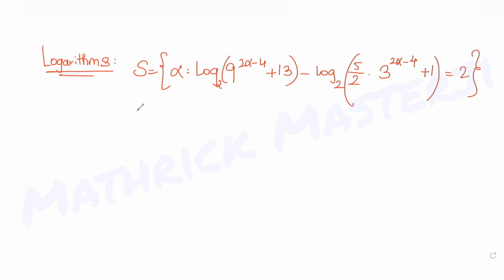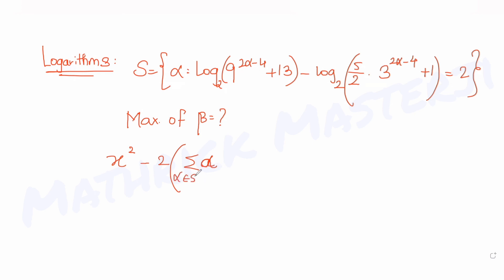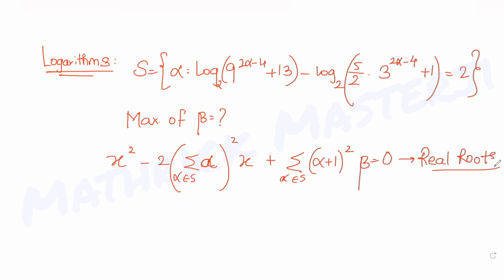The question asks us to find the maximum possible value of beta for which the equation x² − 2·(Σα)²·x + (Σ(α+1)²)·β = 0, where alpha belongs to S, has real roots. So we need to find the maximum possible value of beta for which this quadratic equation has real roots.